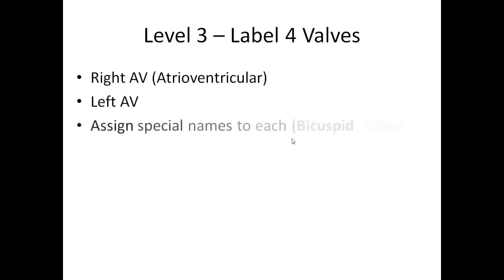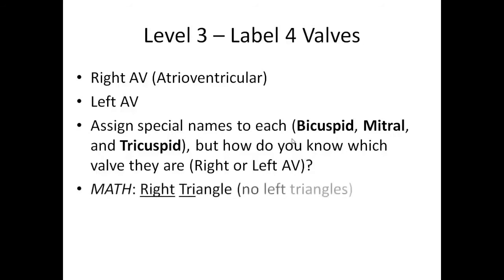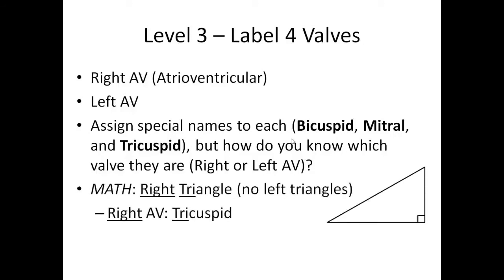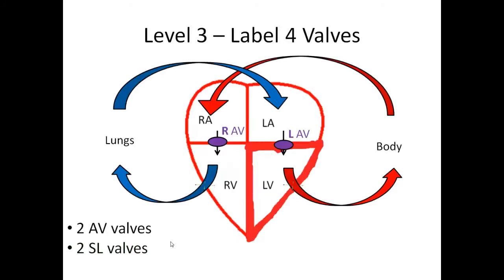The AV valves have special names you'll hear in clinical settings. There are three names for two valves: bicuspid, mitral, and tricuspid. A helpful memory trick: in math we only have right triangles, not left triangles — so 'right' and 'tri' together tell you the right AV valve is the tricuspid valve. The left AV gets the other two names. Also, 'bi' and 'mi' both start similarly and go together on the left side — so the left AV is the bicuspid and the mitral valve.